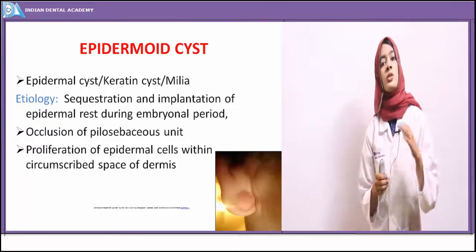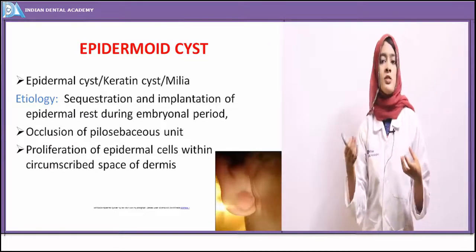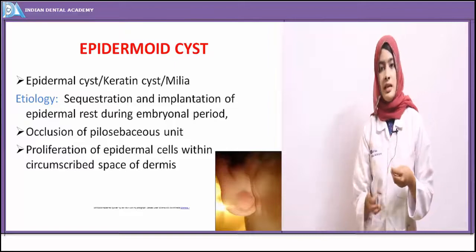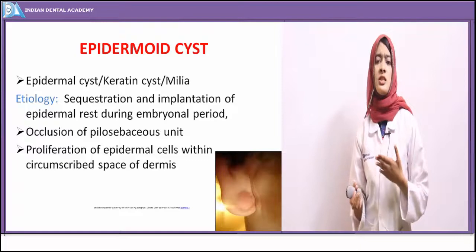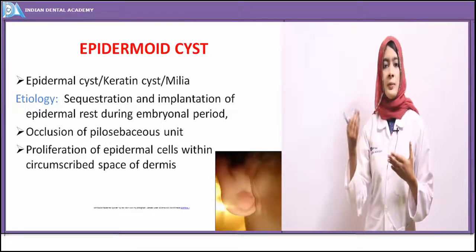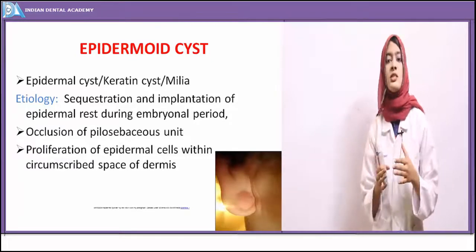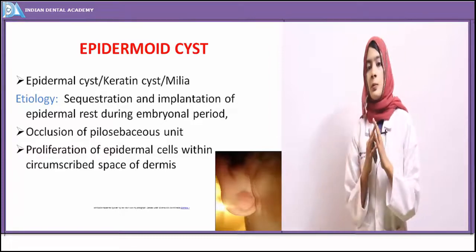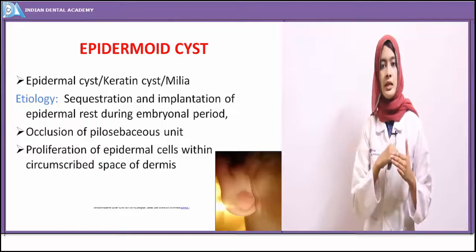When the sebaceous gland openings become occluded, some epidermal cells that were sloughing off become entrapped inside, leading to cystic transformation. Sometimes during surgical procedures, epithelium becomes entrapped along the dermis. This epidermoid cyst is basically seen in the dermis region, and the proliferation of epithelial cells takes place in the dermis.